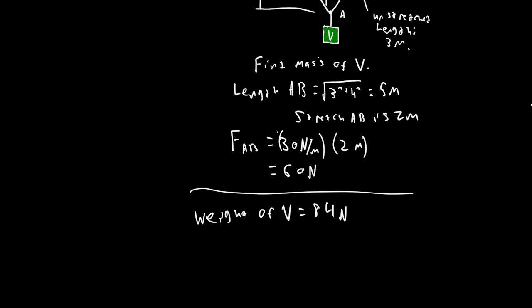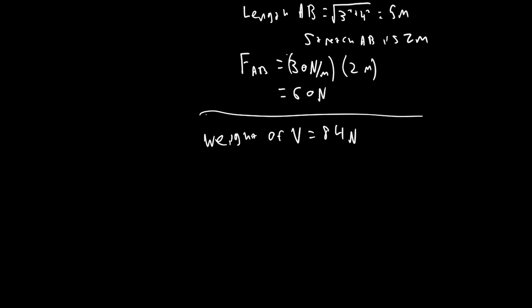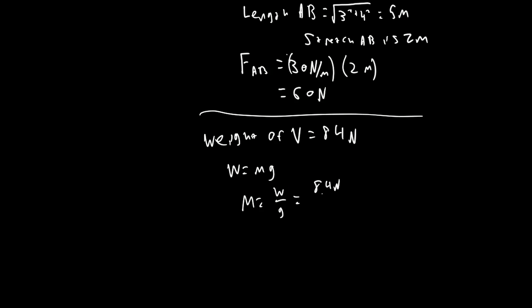But we want the mass, right? Lucky for us, we're working in the metric system, so the mass is pretty easy to find. It's going to be kilograms, not pound second squared per foot. So it's going to be nice units. If this was US customary, it'd just be a little bit more difficult. But in this case, it's relatively easy. Weight equals mass times gravity. Mass equals weight over gravity equals 84 newtons over 9.81 meters per second squared equals approximately 8.56 kilograms.